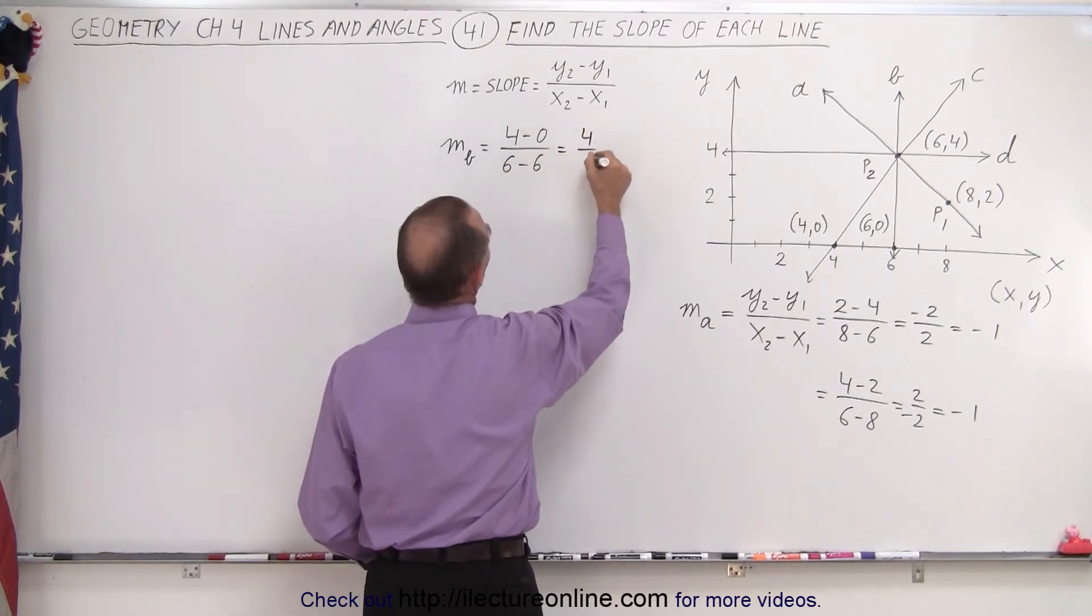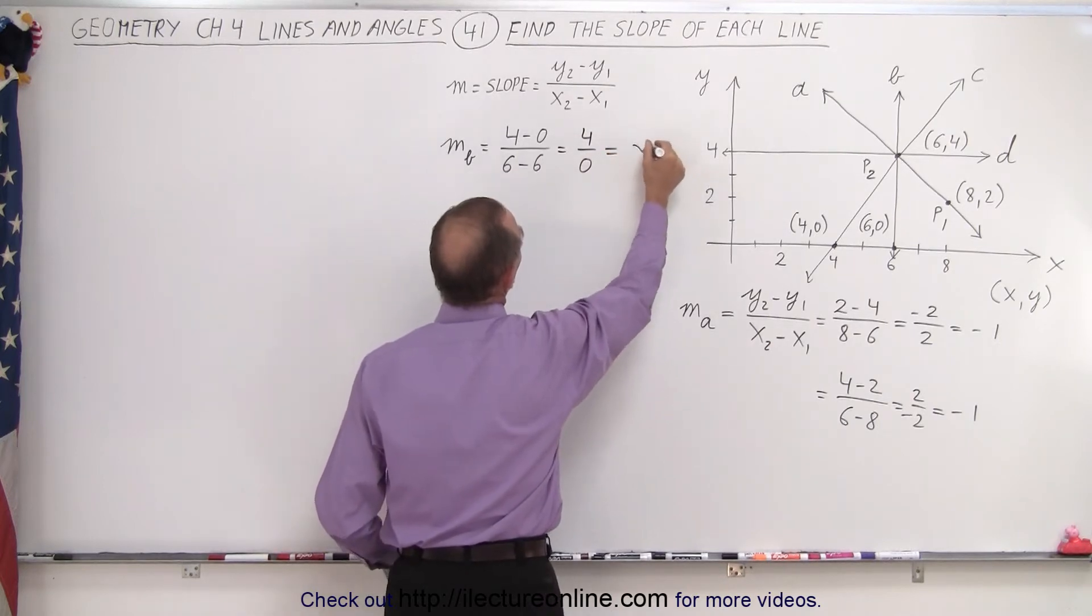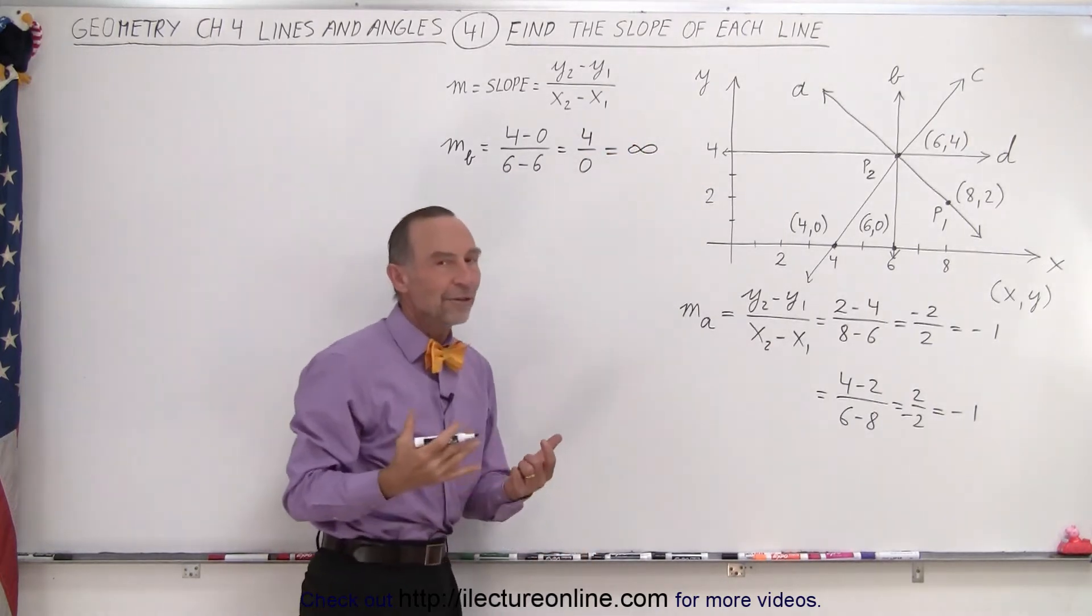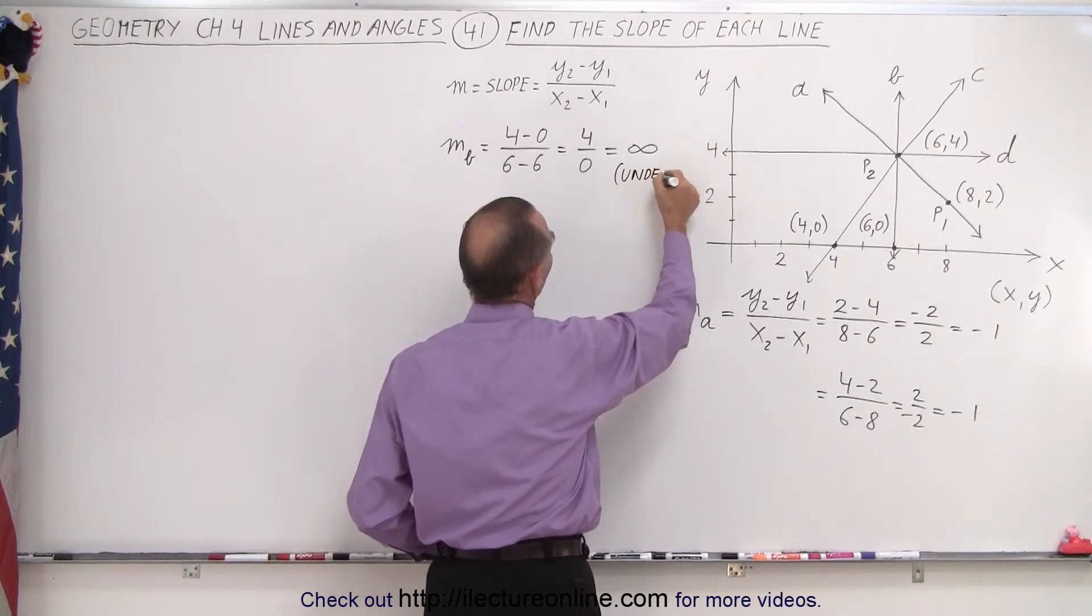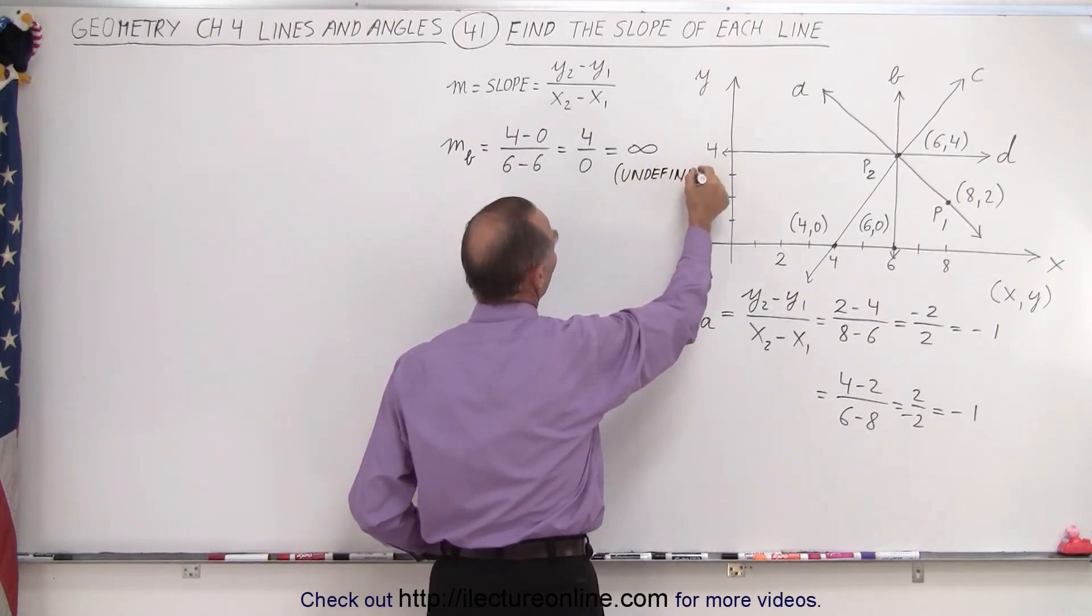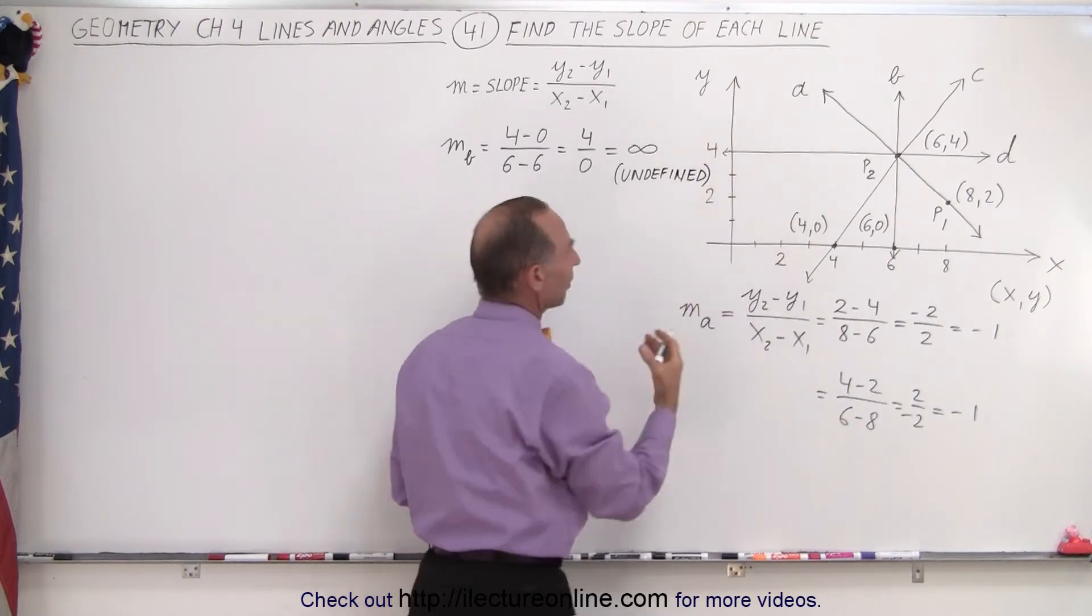Which is equal to 4 over 0, which is equal to infinity or undefined. So either one would be a proper way of saying the answer. So for vertical lines, slopes are undefined or slopes are infinite.